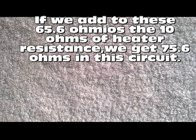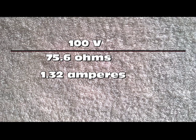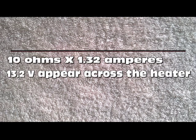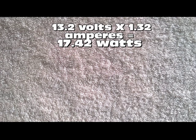If we connect the same heater to the end of the line and add the resistance of the 10-ohm heater to the resistance of the 65.6-ohm cable, we will have a total of 75.6 ohms. Using Ohm's law, 100 volts applied to a load of 75.6 ohms will produce a current of 1.32 amps. The heater, which has a resistance of 10 ohms, will be receiving only 13.2 volts at its input terminals. The power delivered will be 13.2 volts multiplied by 1.32 amps, giving only 17.42 watts — far too little for it to work.